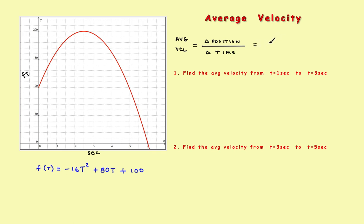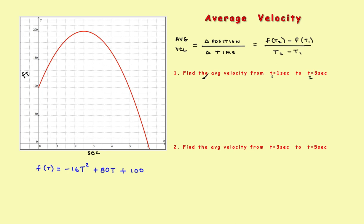As a formula, we write it as the object's position at time 2, F at time 2, minus F at time 1, divided by time 2 minus time 1. That's really nothing more than the slope formula — Y2 minus Y1 divided by X2 minus X1. When looking at average velocity, you're always given two times. So suppose time 1 is 1 second and time 2 is 3 seconds.